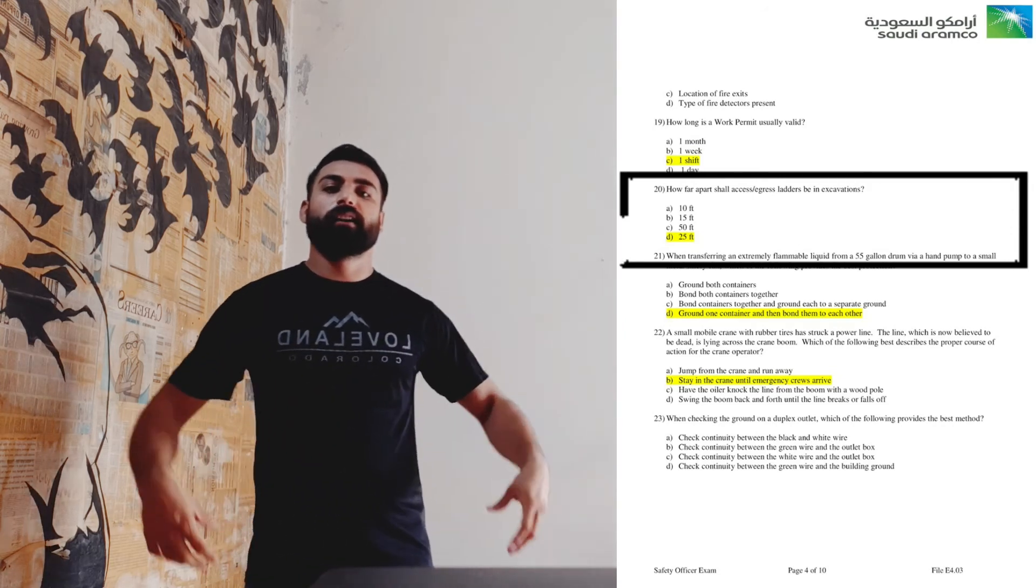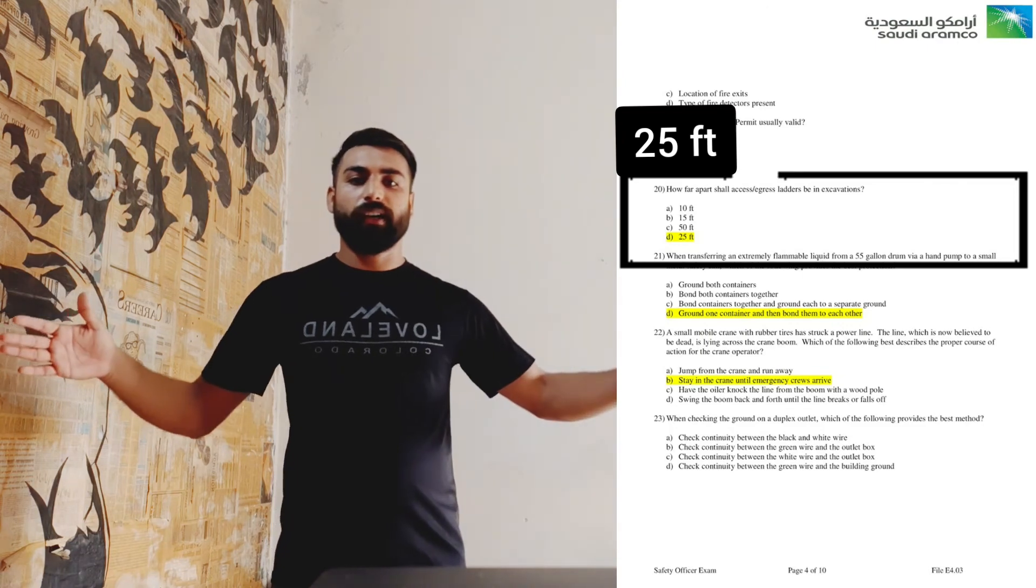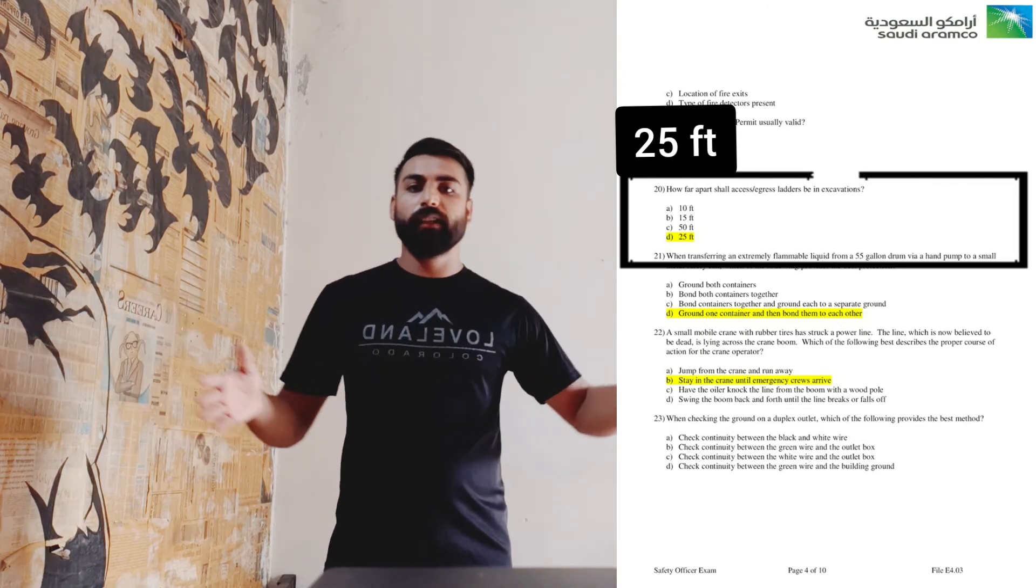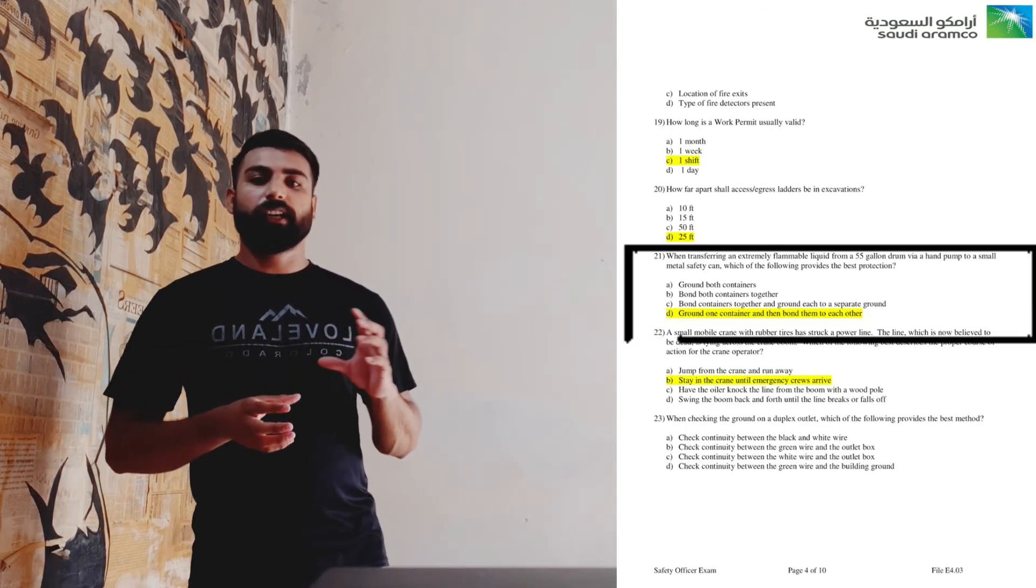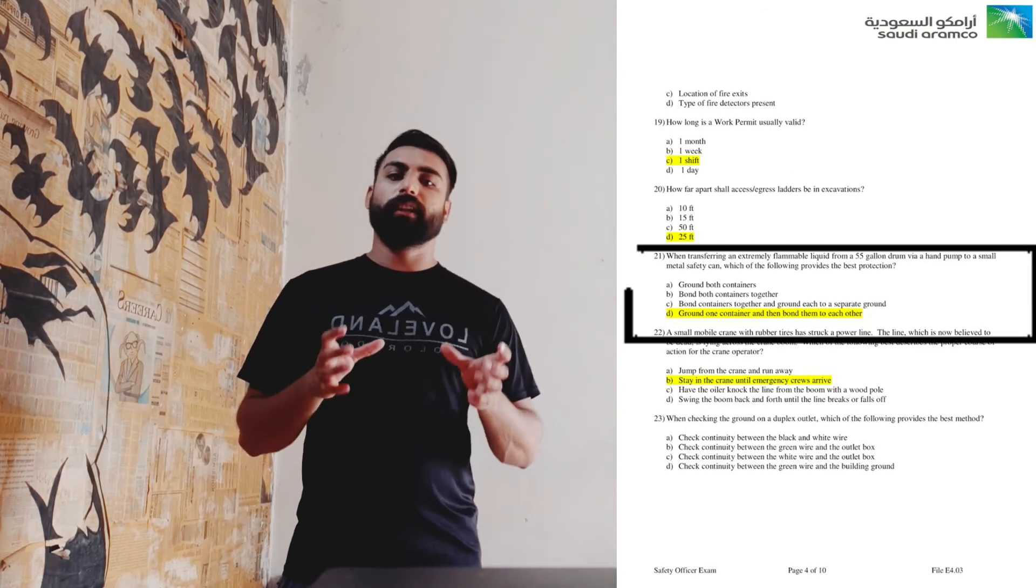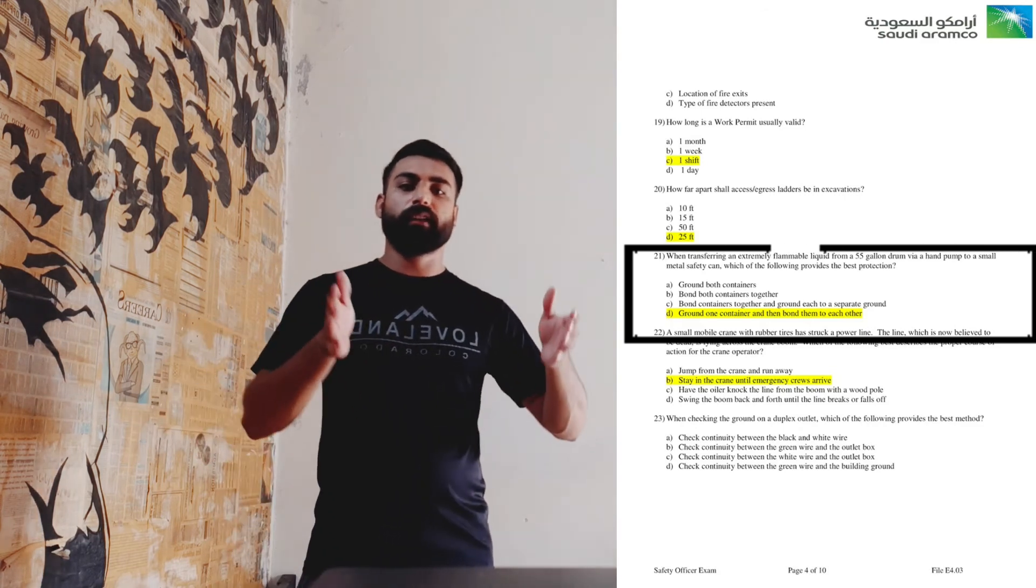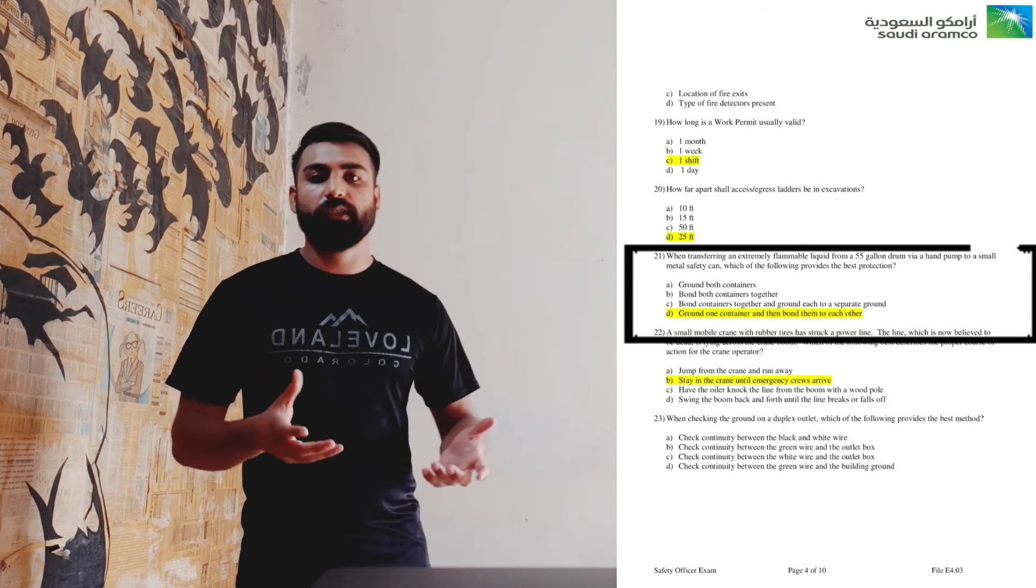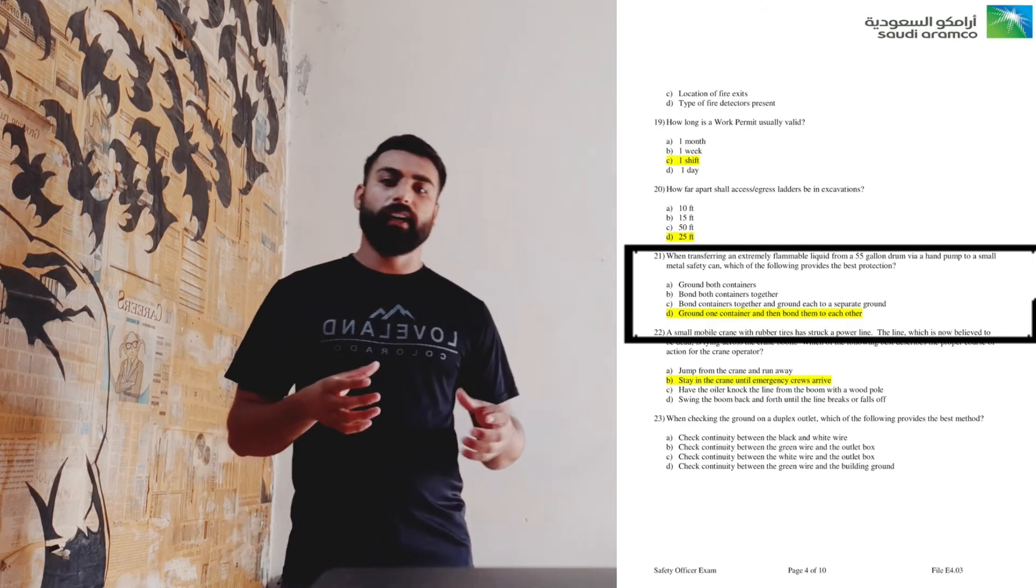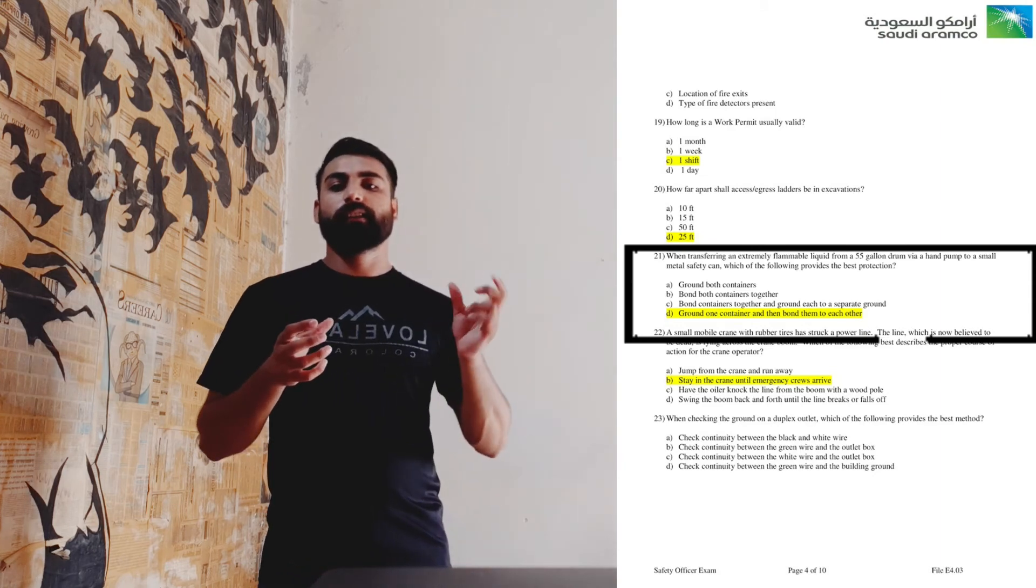They are asking how far apart two ladders should be. That is 25 feet. Question number 21 is regarding the shifting of flammable material. If we have to shift a flammable material from a bigger container to a smaller container, what should we be doing? In this, we should require grounding of the bigger container, and then we should attach that bigger container to the smaller container in order to avoid any kind of flame.